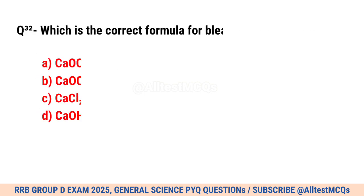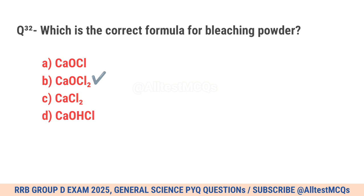Question No. 32. Which is the correct formula for bleaching powder? Correct option is B. CaOCl2.